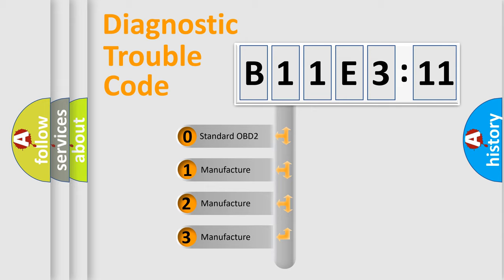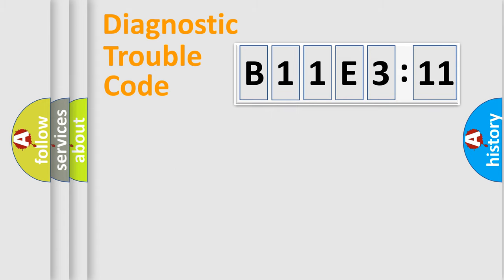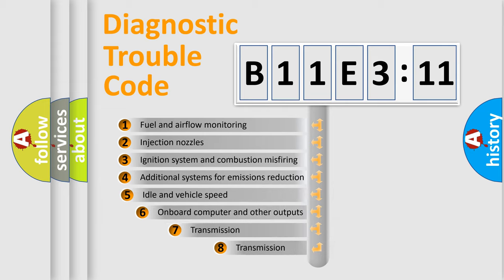If the second character is expressed as zero, it is a standardized error. In the case of numbers 1, 2, or 3, it is a manufacturer-specific expression of the car-specific error.